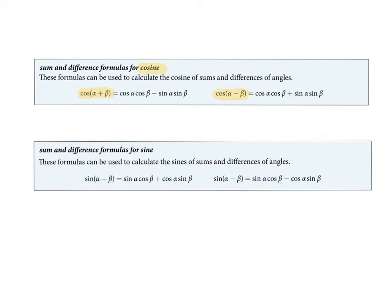I want you to realize that these signs are opposites. The plus sign and the minus sign are opposites of each other. So with cosine, the sign in between is the opposite of the one in parentheses.